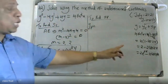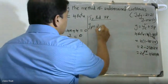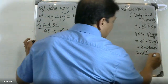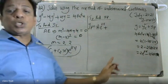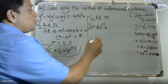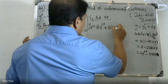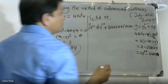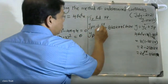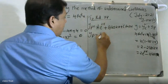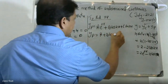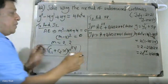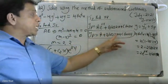The right-hand side contains a constant term (e^(0x)) and a cos2x term. Since the right-hand side has both cos2x and sin2x, we choose yp = A·e^(0x) + B·cos2x + C·sin2x, that is yp = A + B·cos2x + C·sin2x.